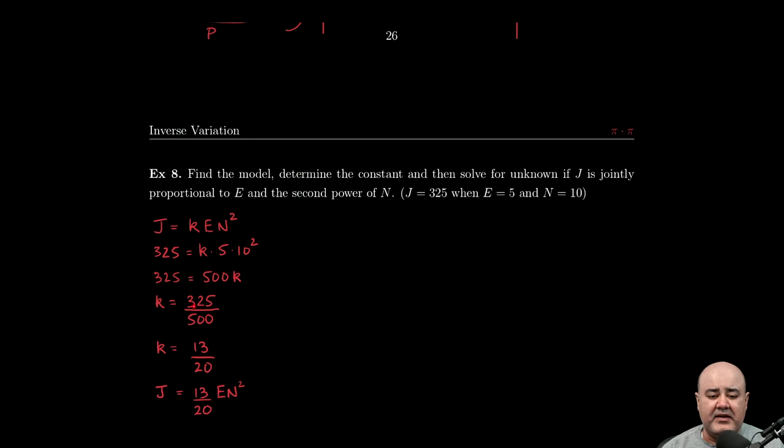25 goes into 325 13 times, 25 goes into 500 20 times, and this cannot be reduced further, so that's as far as we can go. And then the model is j equals 13 over 20 e n squared. So at this stage the question is over because we were asked to find the model, we've done that, we were also asked to determine the constant and we did, but usually the model is where you want to stop.